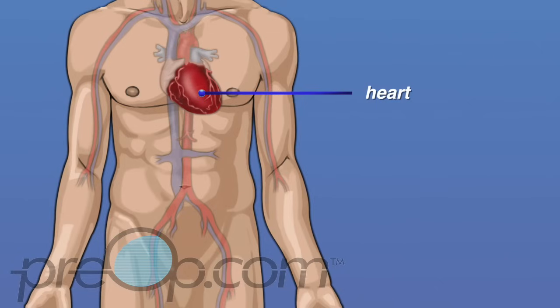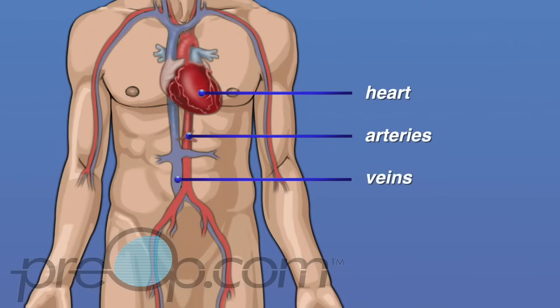Blood flows through tubes called blood vessels. Arteries are strong blood vessels that carry blood from the heart to all parts of the body. Veins are blood vessels that carry blood back to the heart.